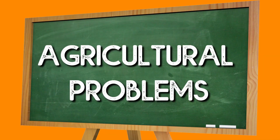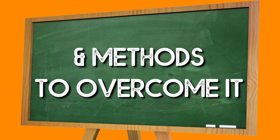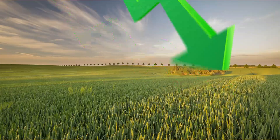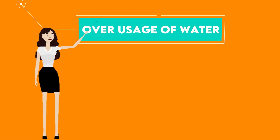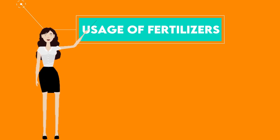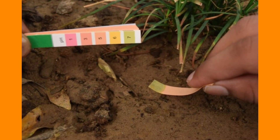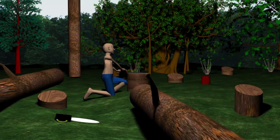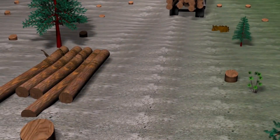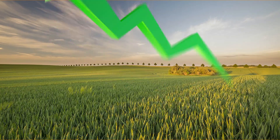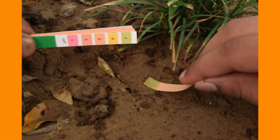Now let's look at some agricultural problems and methods of overcoming them. Number 1, population is increasing but agricultural production is declining. Number 2, excessive water use and improper management has caused the groundwater table to decline. Number 3, use of chemical fertilizers has made the soil saline and alkaline, causing nutrient loss. Number 4, large scale deforestation has resulted in a decrease in net sown area. Number 5, the Green Revolution, while increasing agricultural output, also contributed to land degradation.